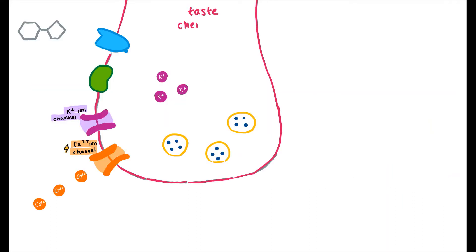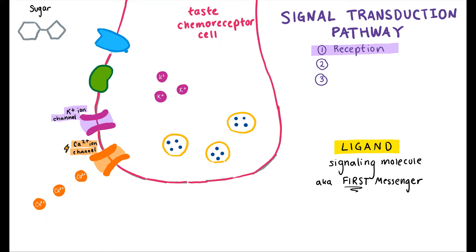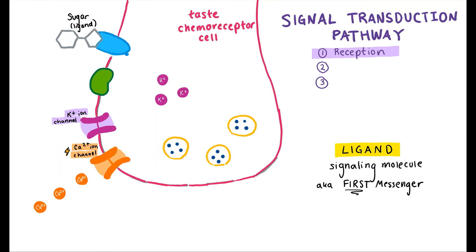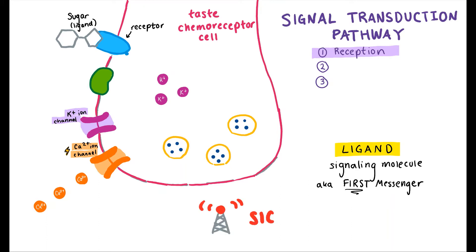Here is a taste chemoreceptor cell, where the three-step signal transduction pathway begins. The first step is called reception. In reception, a ligand binds to a receptor. The ligand here is a sugar carbohydrate from the sweet drink that I consumed. When the sugar binds to a receptor that matches its shape on the surface of the cell, a signal is produced.